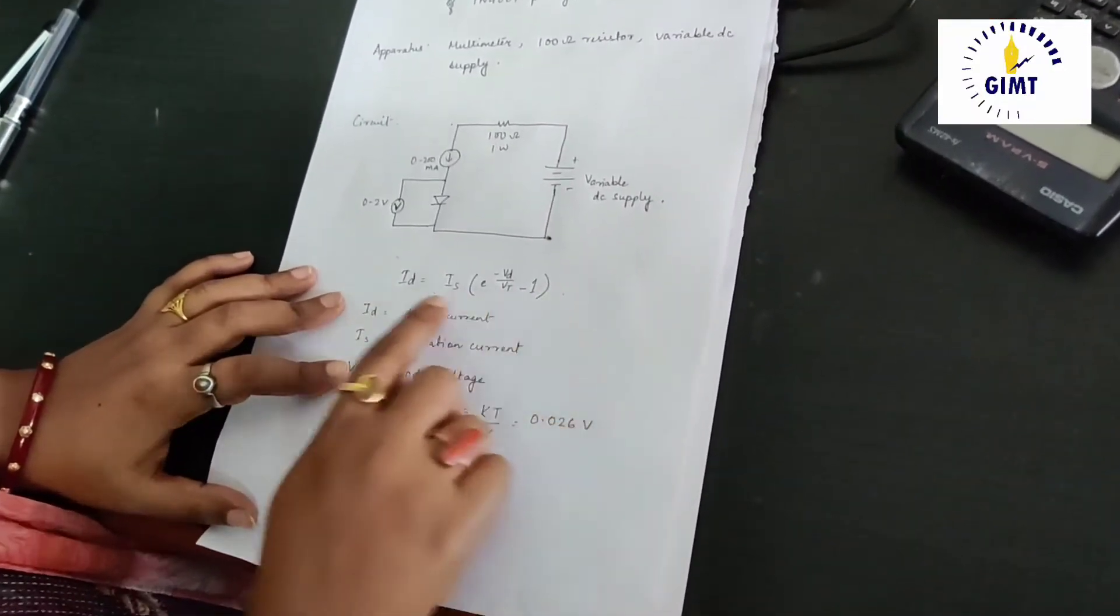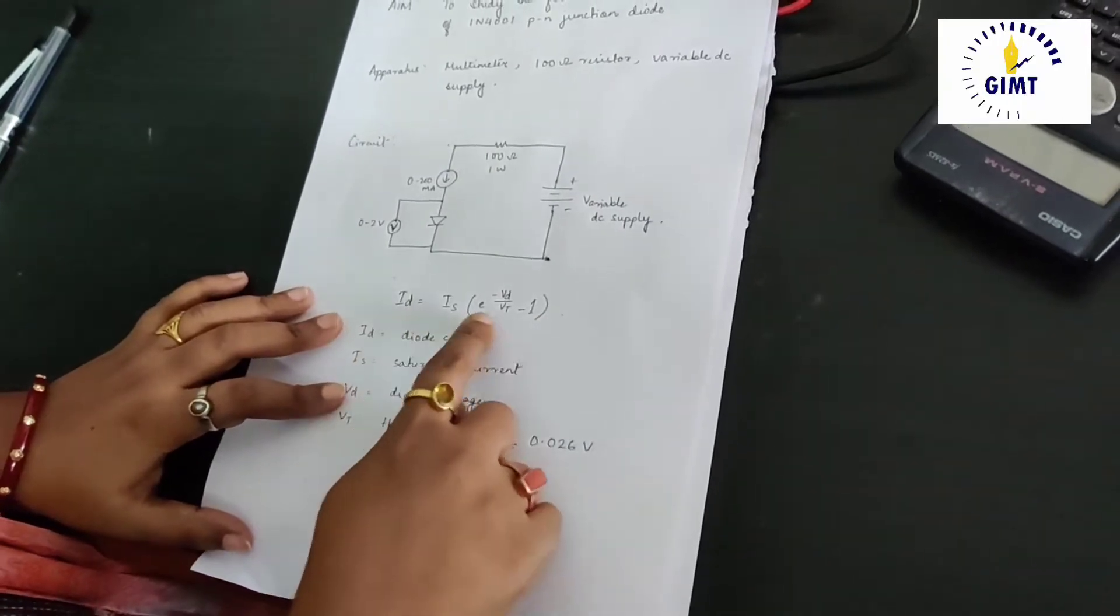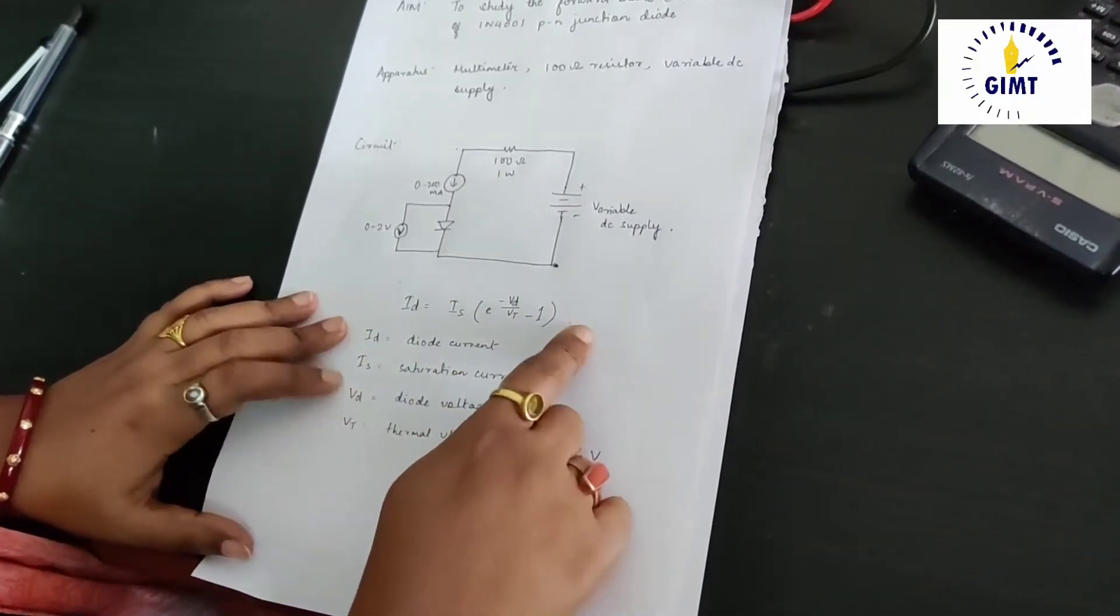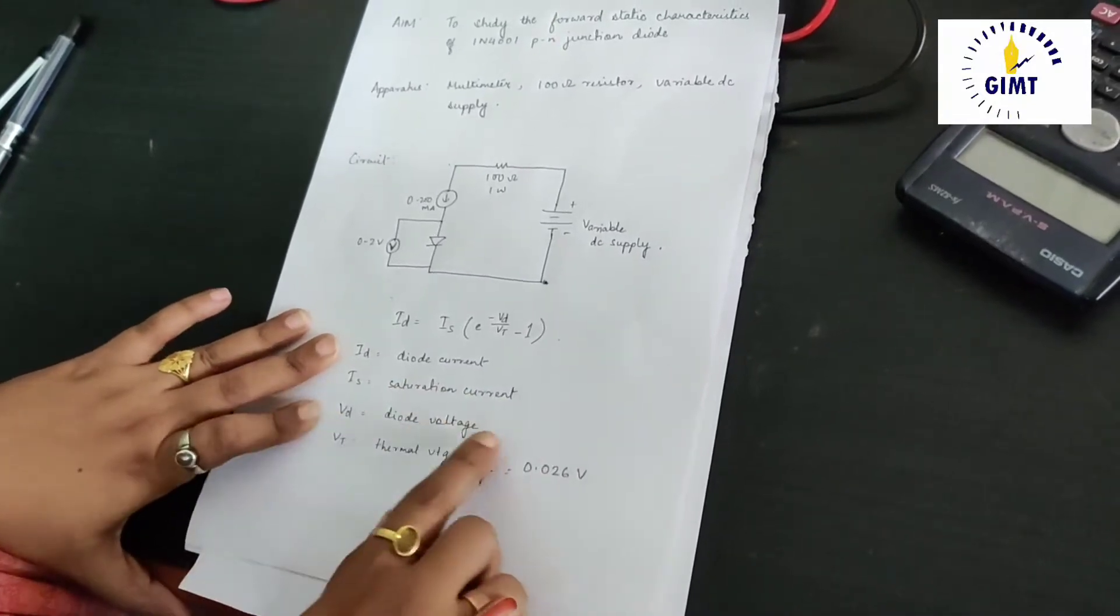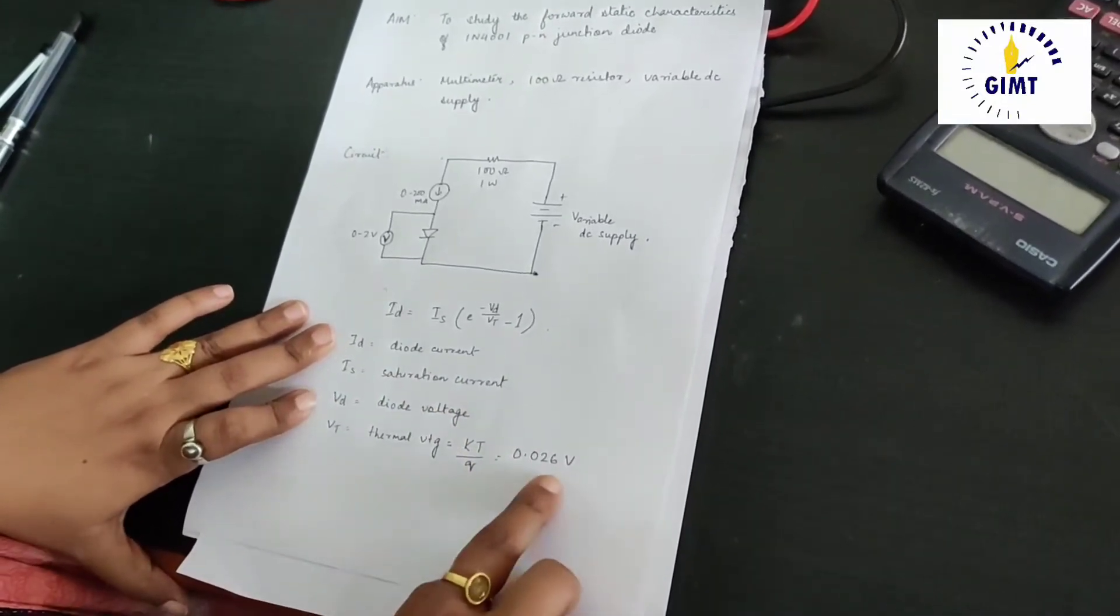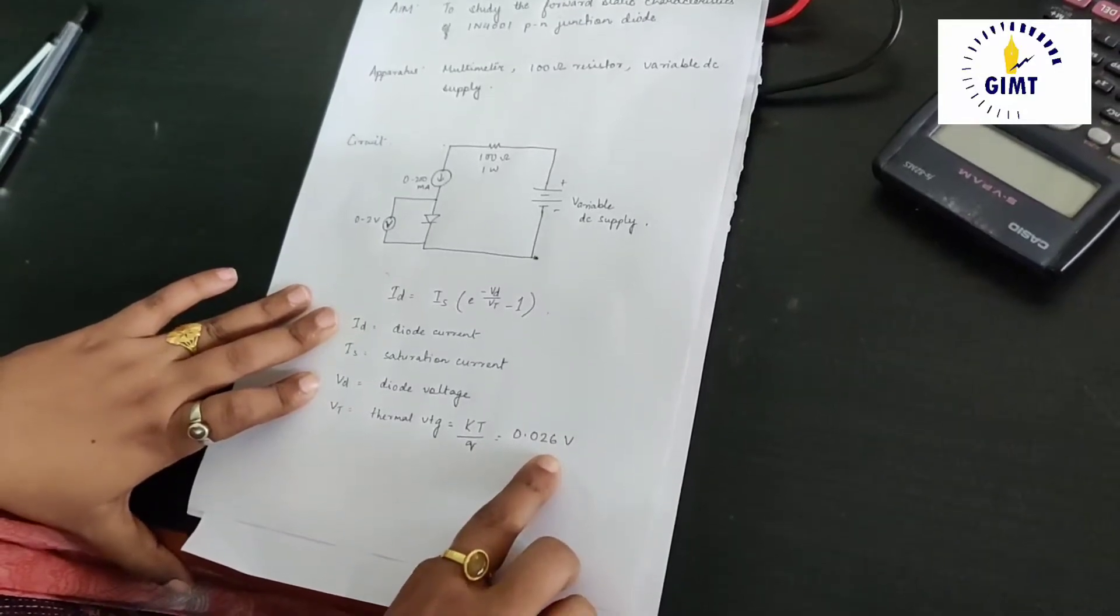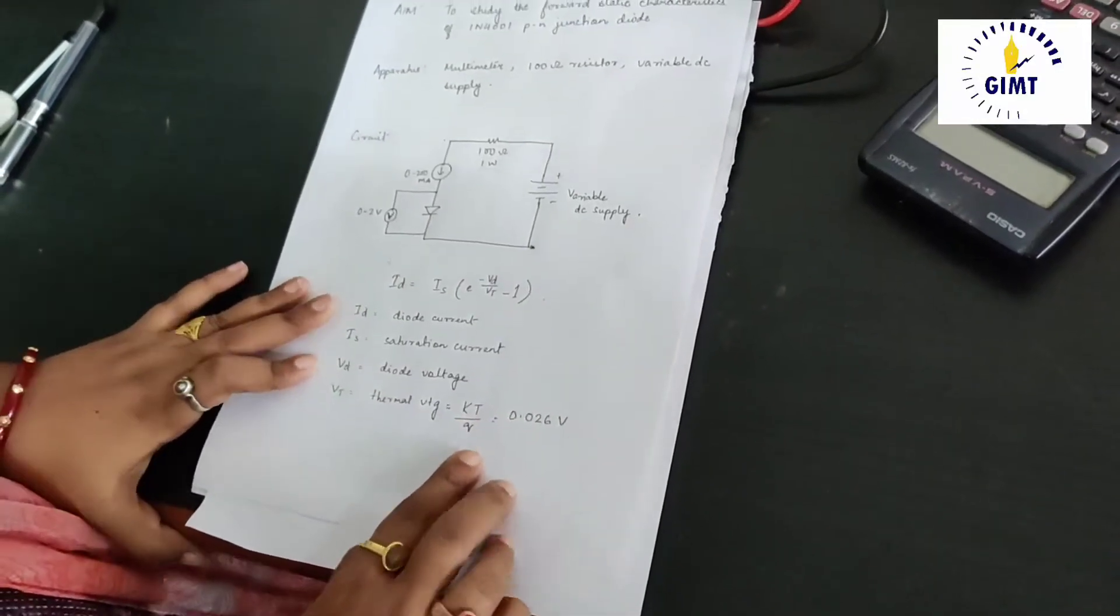The diode current equation is given as ID equal to IS e to the power minus Vd by Vt minus 1 where ID is the diode current, IS is the saturation current, Vd is the diode voltage and Vt is the thermal voltage which is constant 0.026 volt. We get it by KT divided by Q.